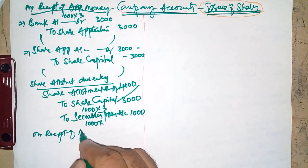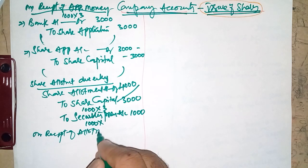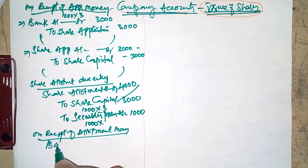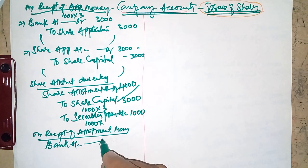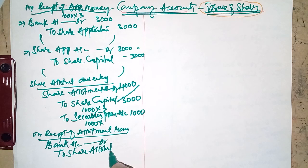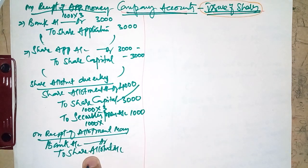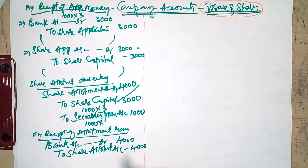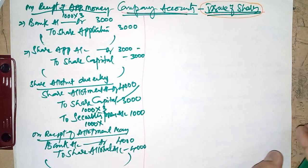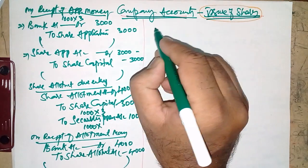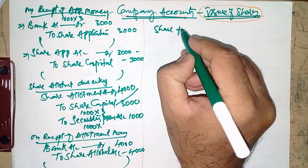On receipt of allotment money, the entry is: Bank Account Dr. to Share Allotment — ₹4000, being share allotment money received. The Share Allotment Account is opened when it is due and closed when we receive the money towards allotment.